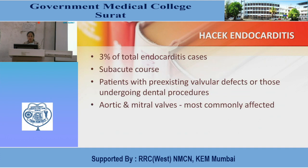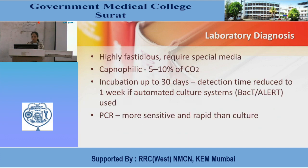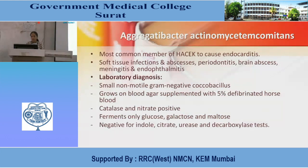HACEK group: a group of highly fastidious, slow-growing, capnophilic gram-negative bacteria; normally oral commensals; occasionally cause local infections of mouth and bacterial endocarditis. Members include Haemophilus parainfluenzae, Aggregatibacter actinomycetemcomitans, Aggregatibacter aphrophilus, Aggregatibacter paraphrophilus, Cardiobacterium hominis, Eikenella corrodens, and Kingella kingae. HACEK endocarditis accounts for 3% of total endocarditis cases — subacute course in patients with pre-existing valvular defects or those undergoing dental procedures; aortic or mitral valves most commonly affected. Laboratory diagnosis: highly fastidious, require special media; capnophilic (5–10% CO2 required); incubation up to 30 days; detection time reduced to 1 week with automated culture systems. PCR is more sensitive and rapid than culture methods.